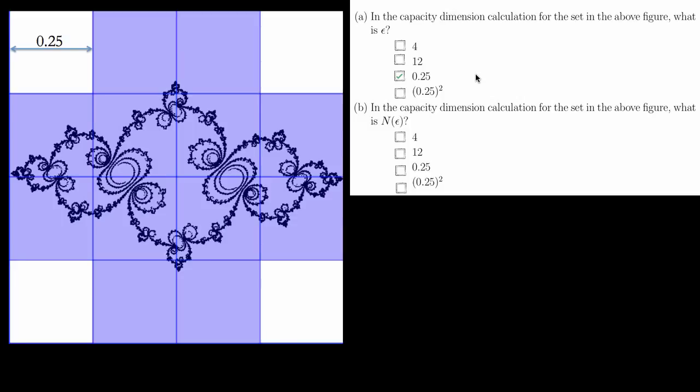For part B, we want to know what n epsilon is. Recall that n epsilon in this calculation is the number of boxes of size epsilon needed to cover the set. Notice here, if you count the blue boxes, you need 12 boxes to cover the Julia set, so the answer is 12.